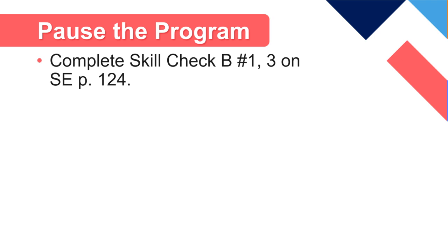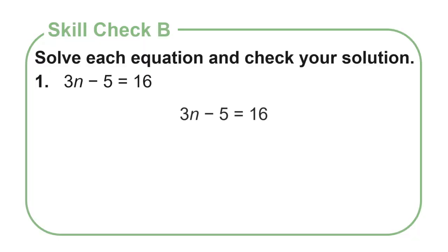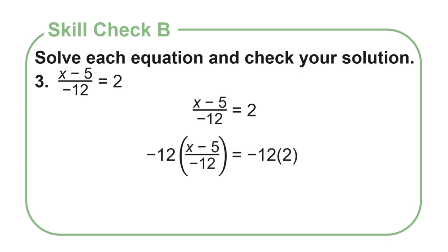Please do a few problems on skill check B. And we have 3n minus 5 equals 16. So, the first thing we have to do is get rid of that minus 5 by adding 5 to both sides. And then, we're going to take that 3n equals 21 and divide both sides by 3 and get n equals 7. I'm not going to show you the checks. Number 3. x minus 5. That is all divided by negative 12. That's equal to 2. So, since it's all divided by negative 12, the first thing we have to do is multiply both sides by negative 12. That's x minus 5. And then, we added 5 to both sides. And x equals negative 19.